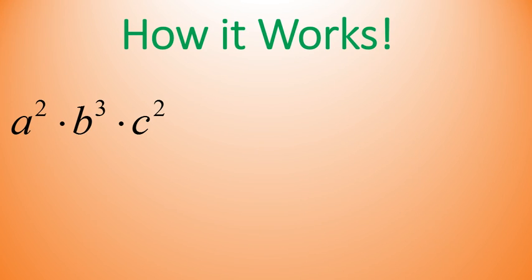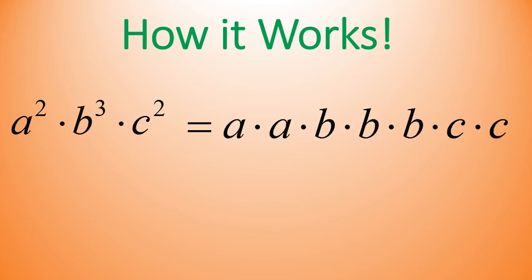If I had a squared times b cubed times c squared, I could expand that out to look like this: a times a, b times b times b, c times c. And because they're all multiplied, you can write it out like this — this is the expanded form. To rewrite it in exponential form, I would simply write it as a squared b cubed c squared. Notice I've gotten rid of those multiplication dots. When exponents have different bases like this, we keep the bases separate and the exponents as a unit.